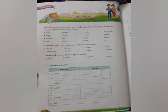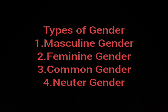What do we mean by gender? Whenever you fill a form, there is a column of gender. Boys write male and girls write female. So we have four types of gender: masculine gender, feminine gender, common gender, and neuter gender.